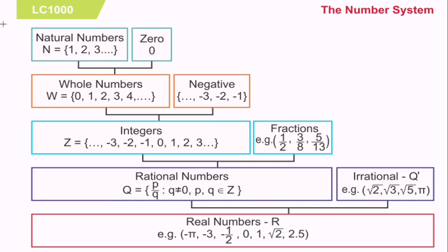That is a rational number because it is repeating. And it can also be terminating. For example, 3 fourths — if we convert it into decimal, that is equivalent to 0.75. Those are the rational numbers.